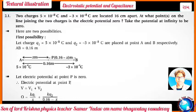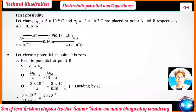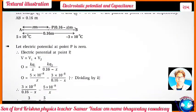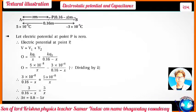Q1 and Q2 are placed at points A and B respectively, where AB = 0.16 meter. As you can see in the figure, A has 5×10⁻⁸ and B has -3×10⁻⁸ coulomb, with distance 0.16 meter between them. Let the electric potential at point P be zero. The electric potential at P: V = V1 + V2, so 0 = KQ1/x + KQ2/(0.16 - x).